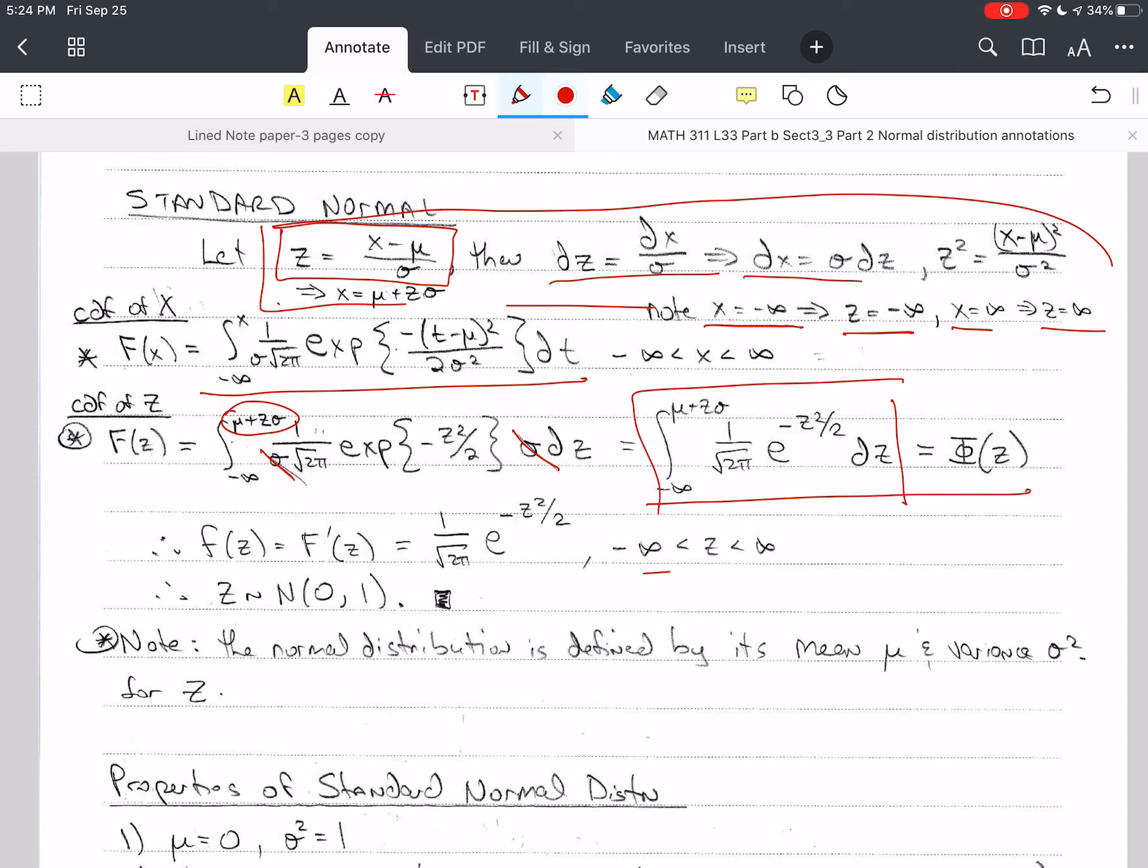And so I substitute in, I get mu plus z sigma here, I do the substitution, the sigma cancels, and I end up with this integral here, which is the integral of the CDF of the z, or standard normal distribution. We call that phi of z. And so by the fundamental theorem of calculus, and knowing that this is a CDF, then the derivative is a PDF. And z is distributed as a normal with zero mean and one variance.